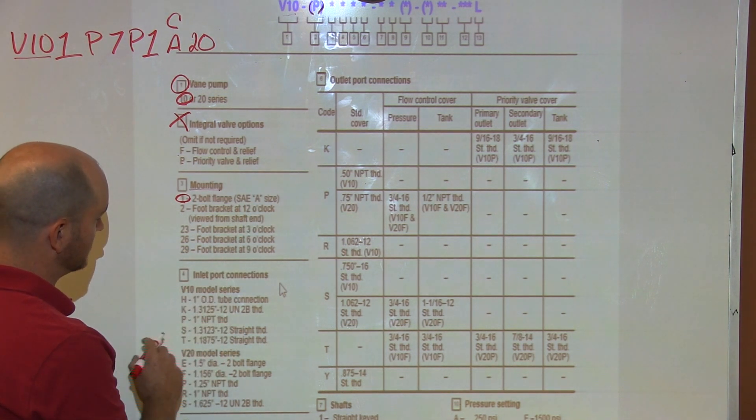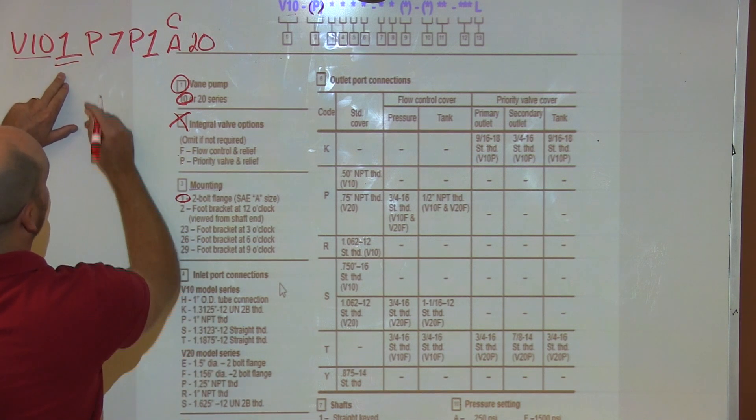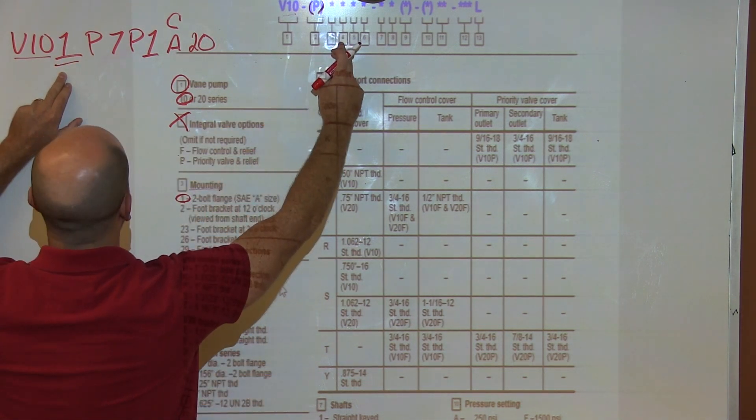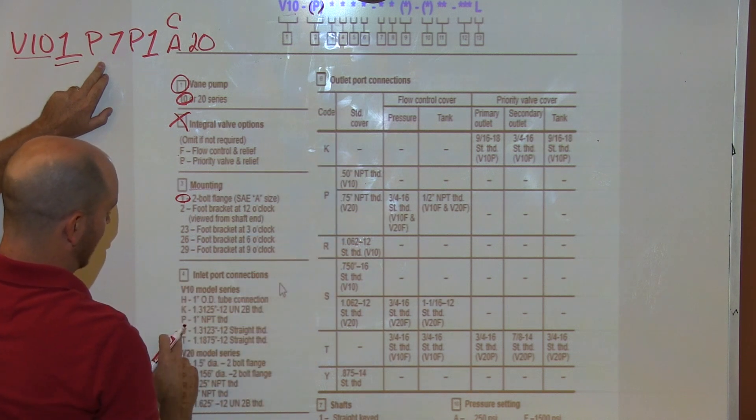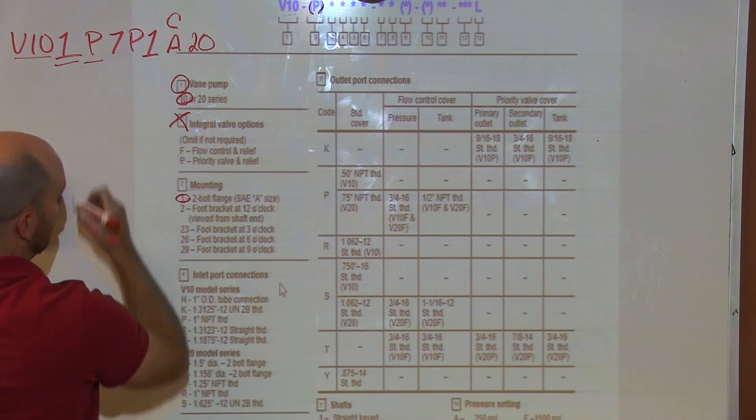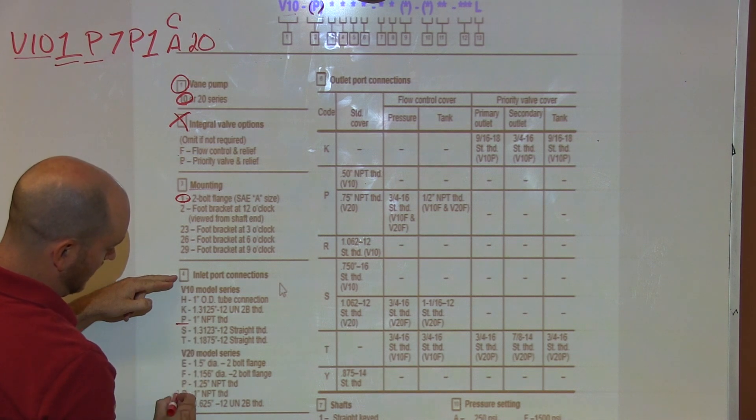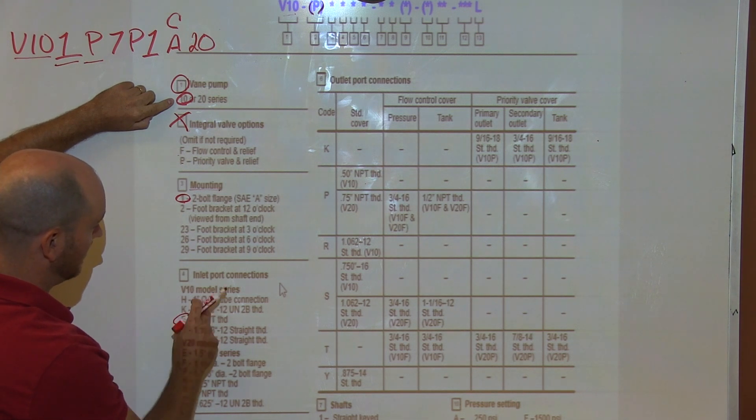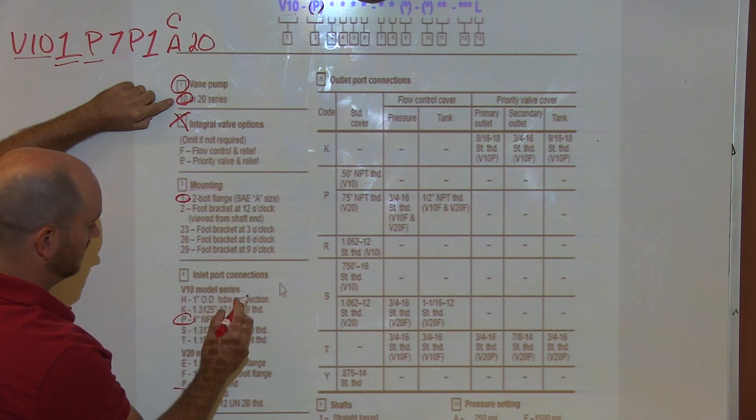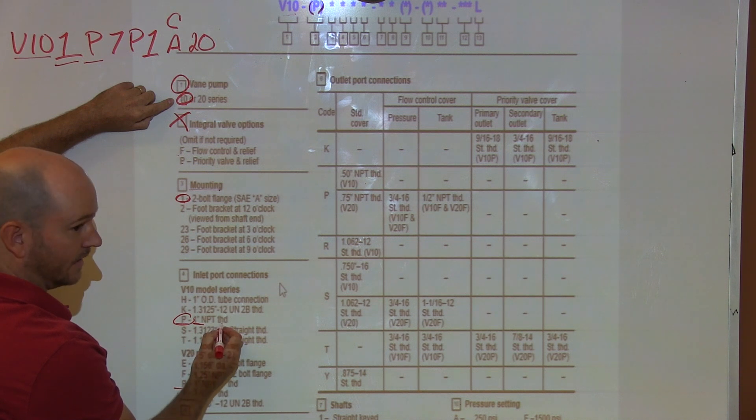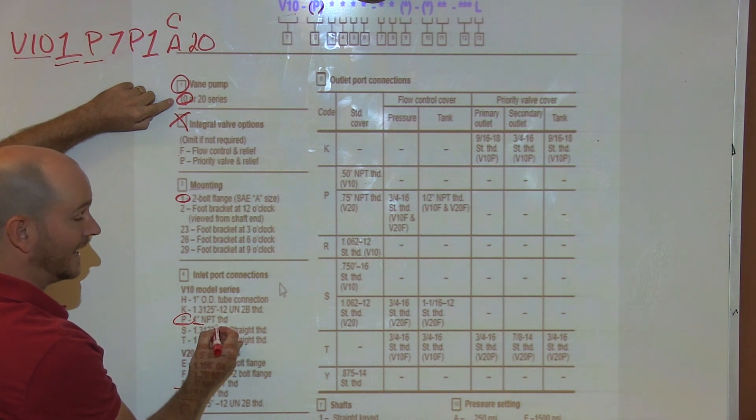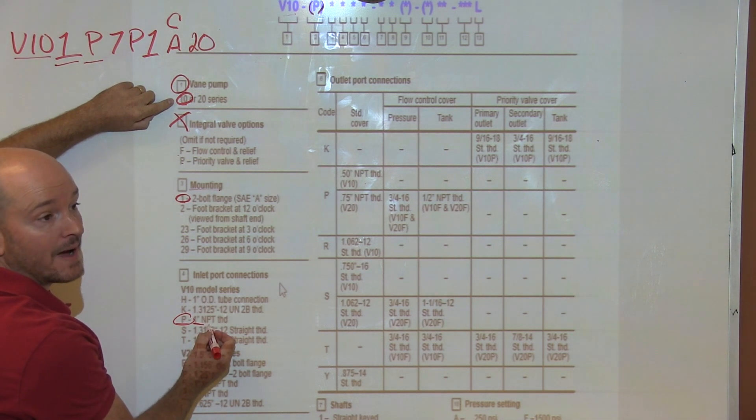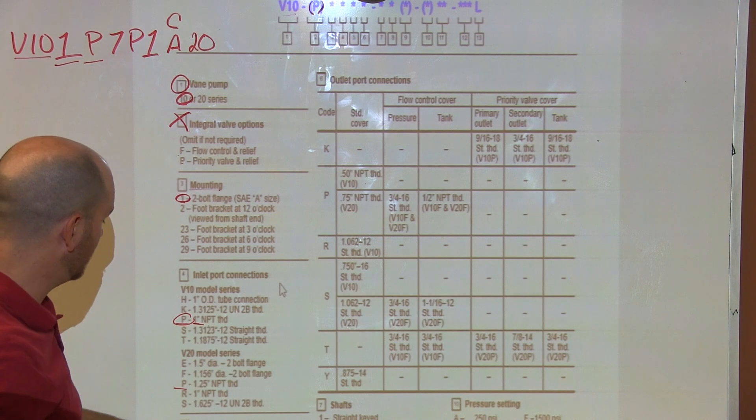Then we have our inlet ports. So we got one done, and that was three. We're going to go over our four mark, bring this down, and this is a P. So here if I notice in my four I have a P here and a P here—this is why understanding that this is a model V10 is so important. This will tell you that my inlet port connection is one inch NPT thread. So I know if I order a replacement pump that this is the size thread I have to have available for my easiest swap out of this pump.